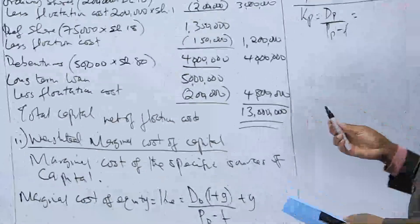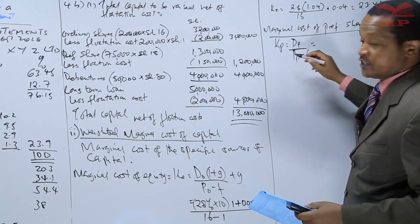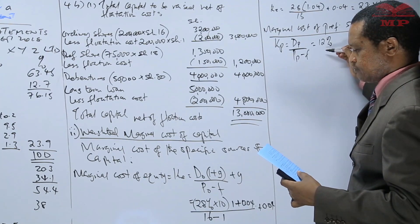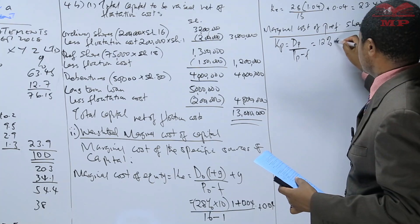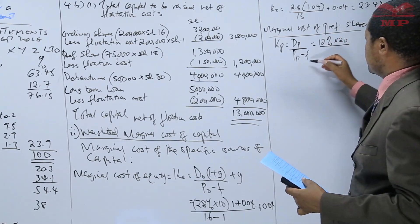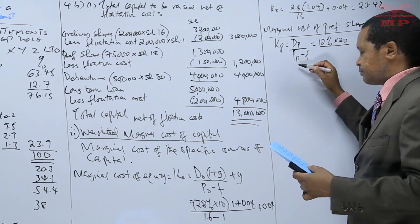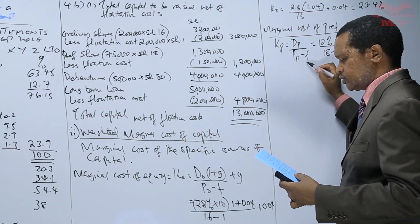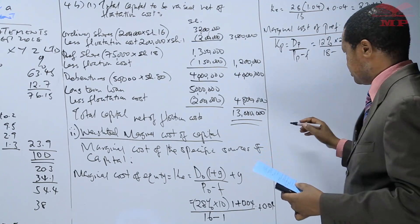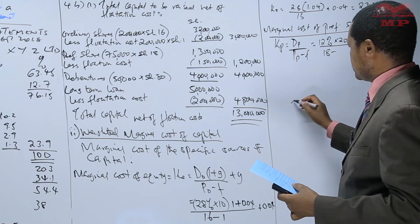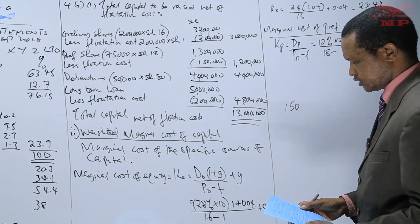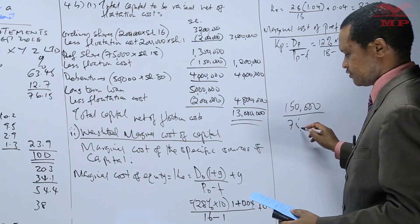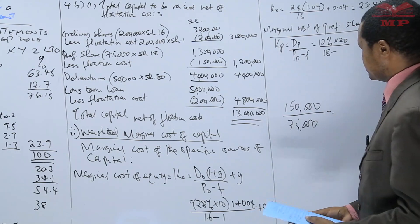The preference dividend from note number two is 12%. This 12% has to be applied on the par value. The par value is 20 shillings, over the market price per preference share, which is 18 shillings, minus the flotation cost. We are not provided flotation cost per share, but we can determine it — we have the total flotation cost of 150,000 for all the shares, then we divide by the number of shares, 575,000.